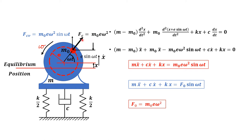Basically, this system is constrained and can move in the vertical direction only, meaning this is a single degree of freedom system and its movement can be described by displacement X from an equilibrium position. Considering the vertical component of the force Fc, the vertical component of the centrifugal force becomes Fcv = M0·E·ω²·sin(ωt).